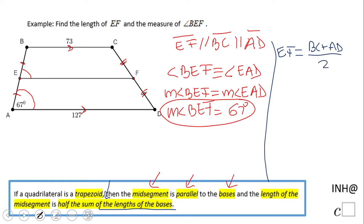So let's just write the numbers. EF equals 73 plus 127 over 2. EF equals 200 over 2. And EF will be 100.